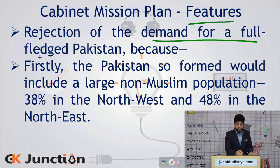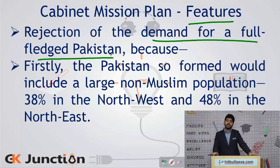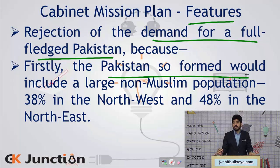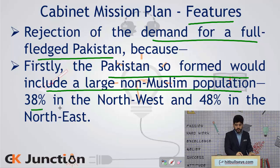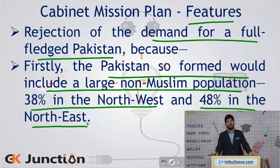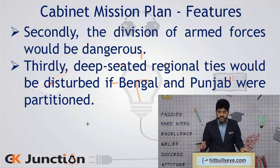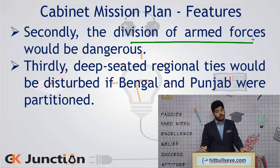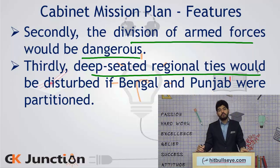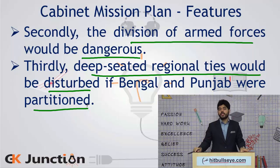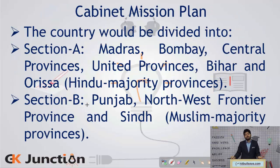Talking about the features of the Cabinet Mission Plan: firstly, it rejected the demand for a full-fledged Pakistan and outrightly rejected the two-nation theory, for three reasons. First, the Pakistan so formed would include a large non-Muslim population — 38% in the north-western parts and 48% in the north-eastern parts — making it very unviable. Second, division of armed forces along religious lines would be very dangerous. Third, deep-seated regional ties between Bengal and other parts of the country, and between Punjab and other parts, would be disturbed if partition were to take place.